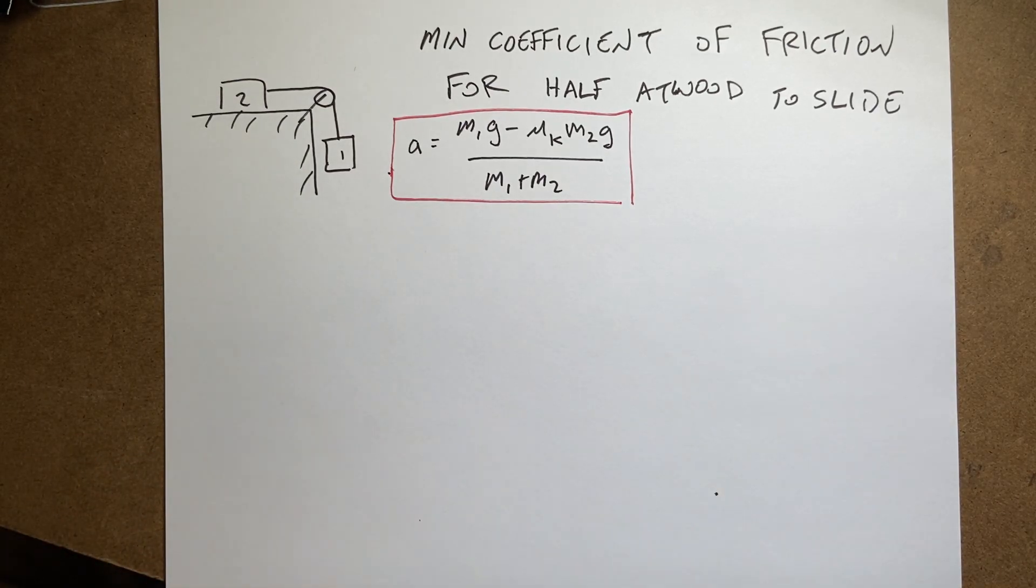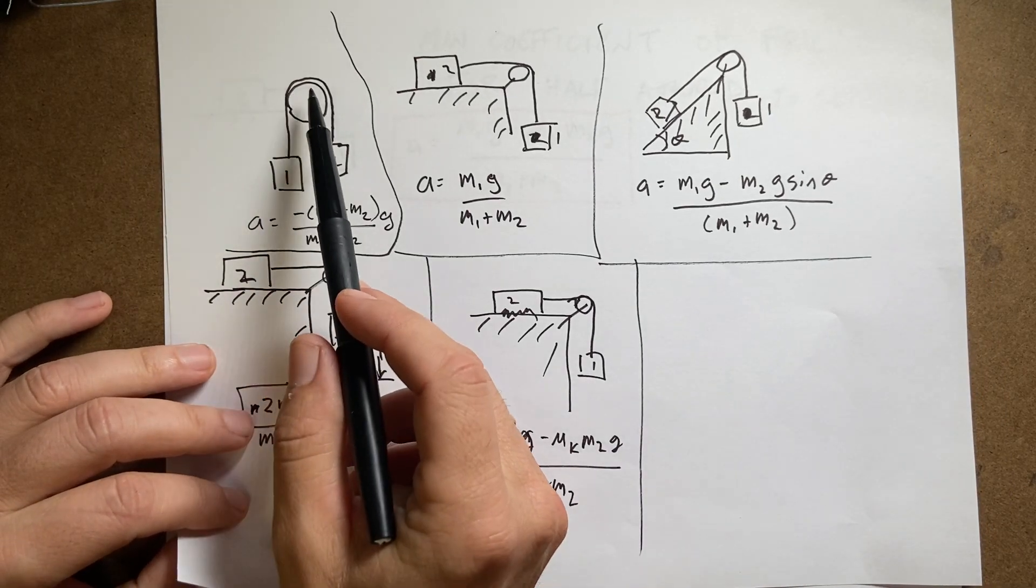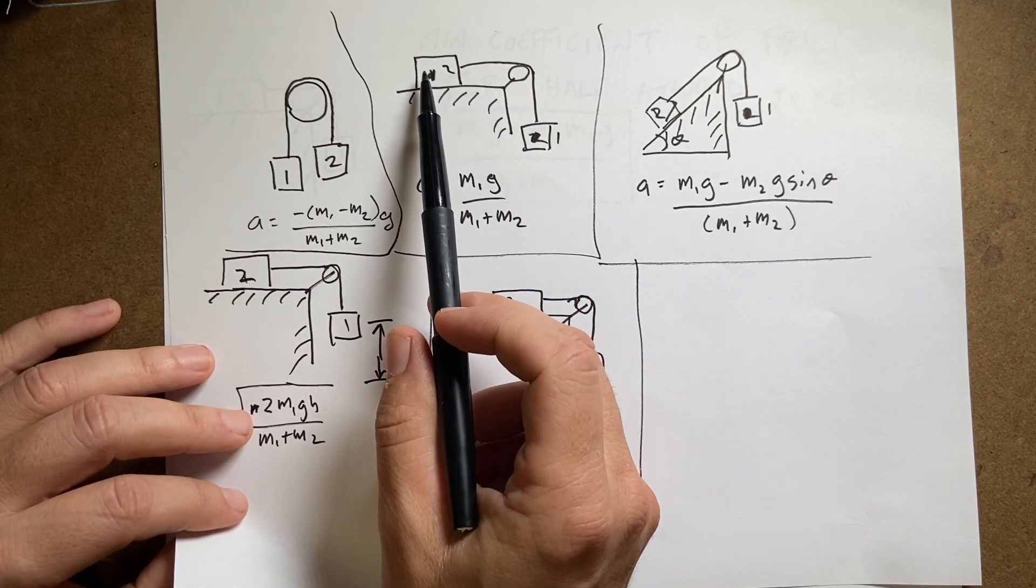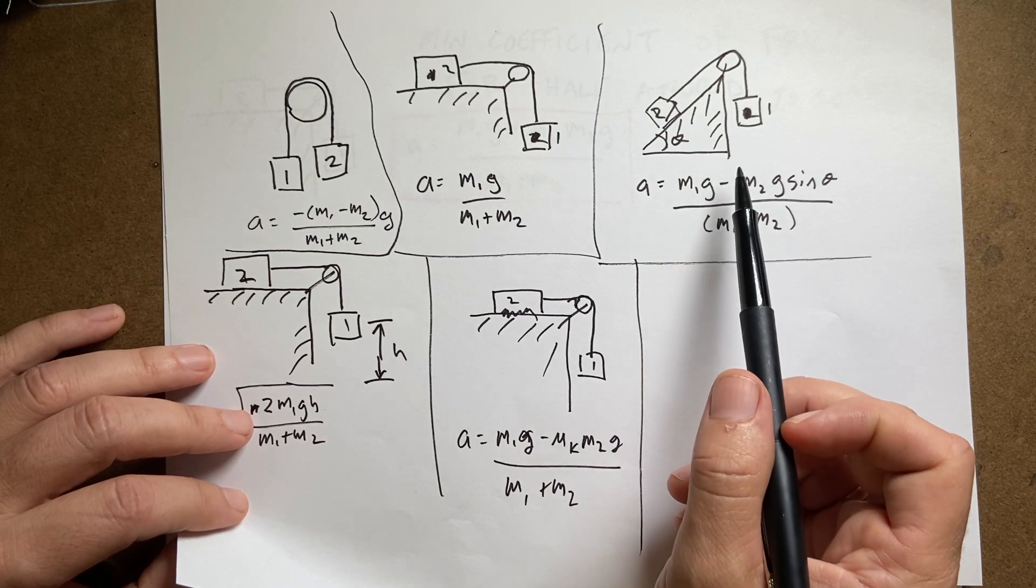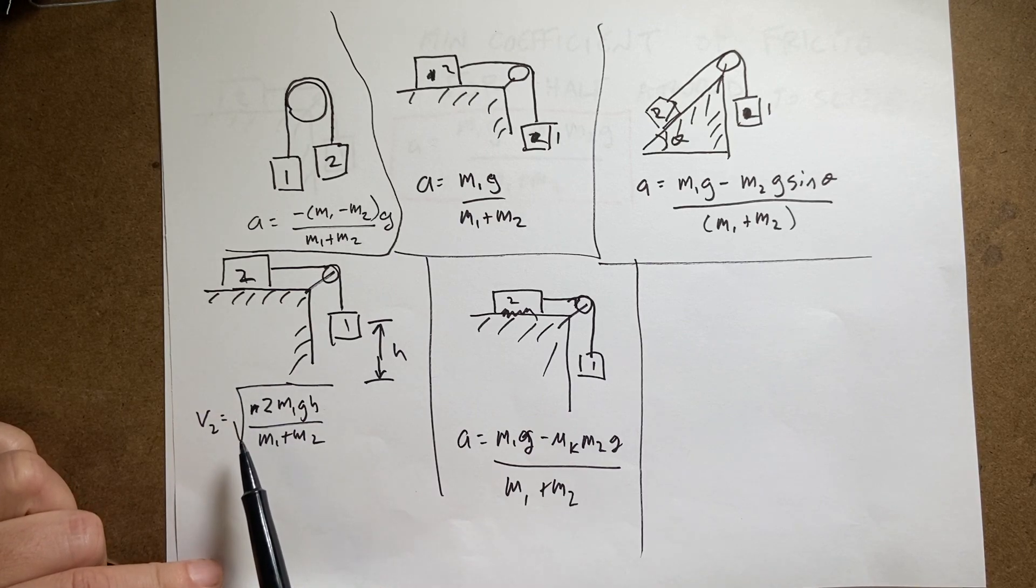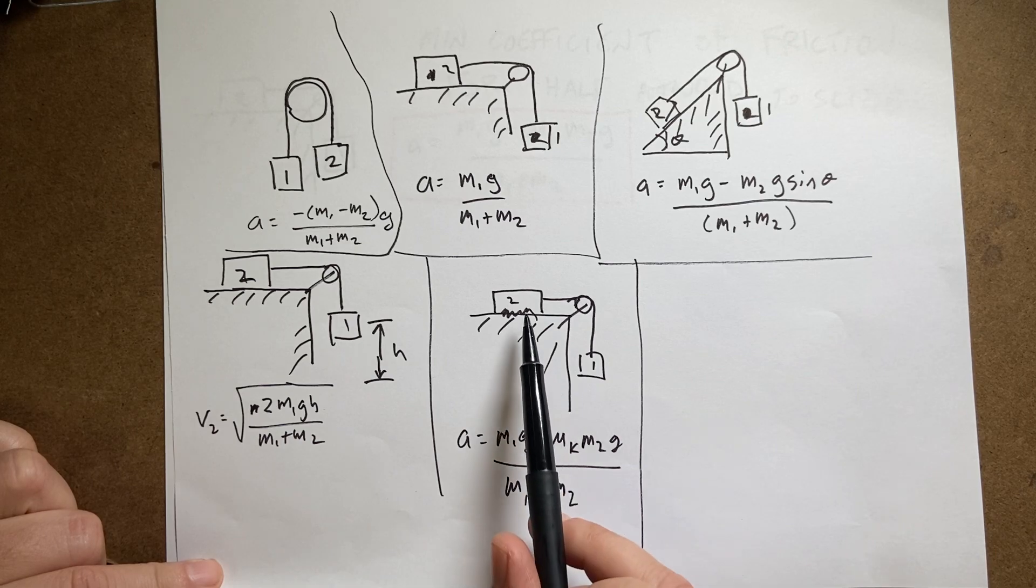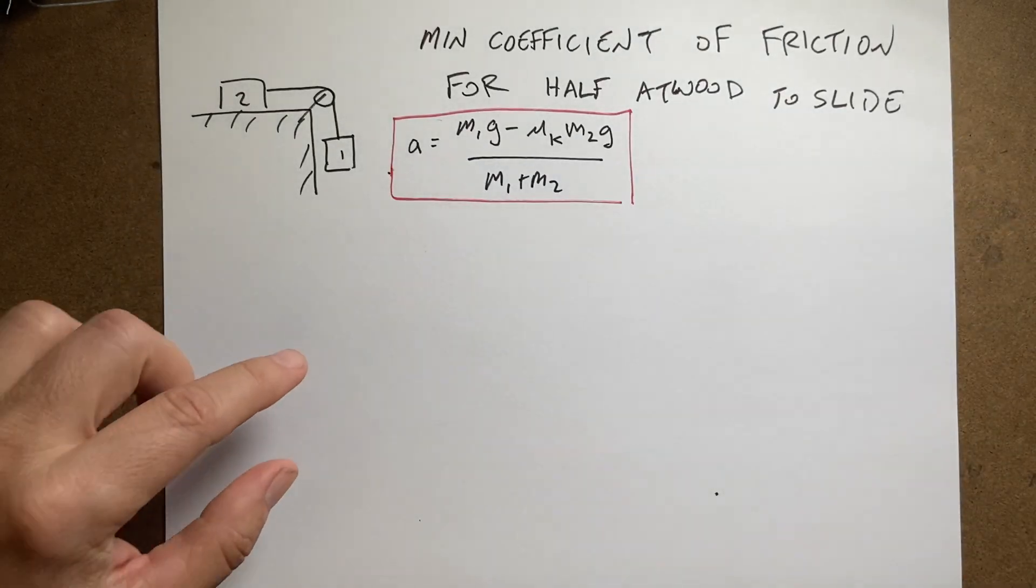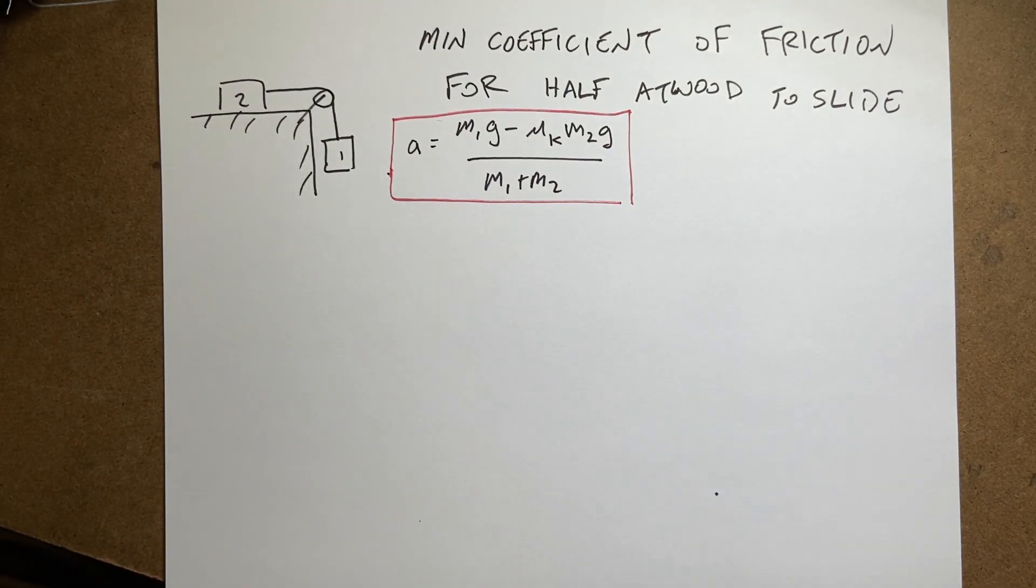Let me give a quick review of where we've been. First I did a normal Atwood machine which is just a pulley with two masses, a frictionless pulley. Then I did a half Atwood machine without friction, then an inclined half Atwood. After that I did the speed of a half Atwood machine as it falls, and then a half Atwood machine with friction. That's where we are. This is actually the acceleration of the half Atwood machine if it starts to slide, but what if it doesn't slide at all?